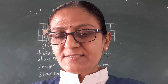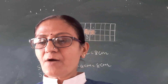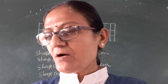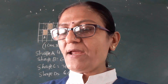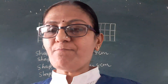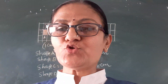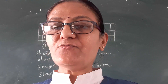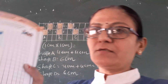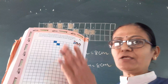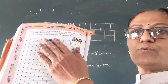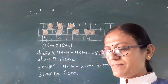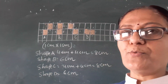Let us start the practice time. The question is: how many different shapes can you make by joining two squares? Draw them on the square sheet given below. Here, one square sheet is there. In homework I gave that you join two squares and make the measurement of the boundary.